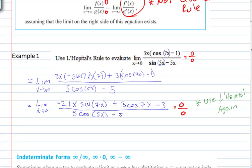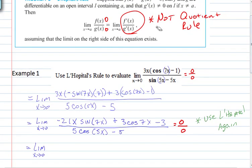We're going to take the derivative of the top again and divide by the derivative of the denominator. The limit of a ratio of functions equals the limit of the ratio of their derivatives, as long as the ratio is in an indeterminate form. We have to use the product rule again: first times the derivative of the second — derivative of sine is cosine times 7.